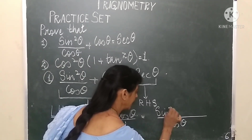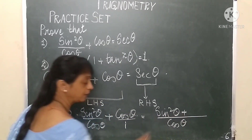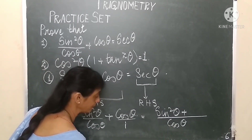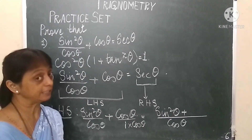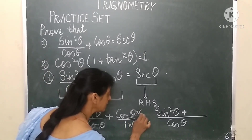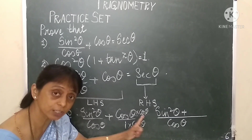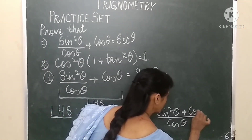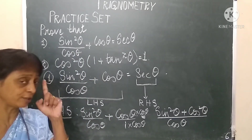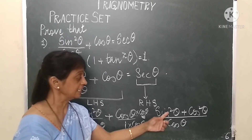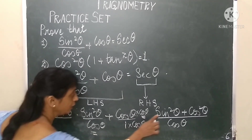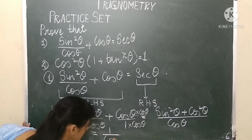For the first term, the denominator already equals the LCM, so we write the numerator as sin²θ, with a plus sign. For the second term, the denominator is 1; to equalize it to cosθ, we multiply by cosθ, and whatever we do to the denominator we must also do to the numerator, so we multiply by cosθ, giving cos²θ. Now, sin²θ + cos²θ in the numerator is a trigonometric identity equal to 1.